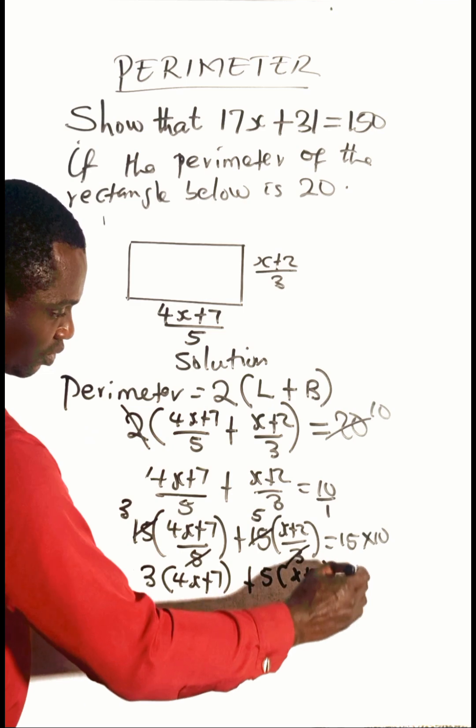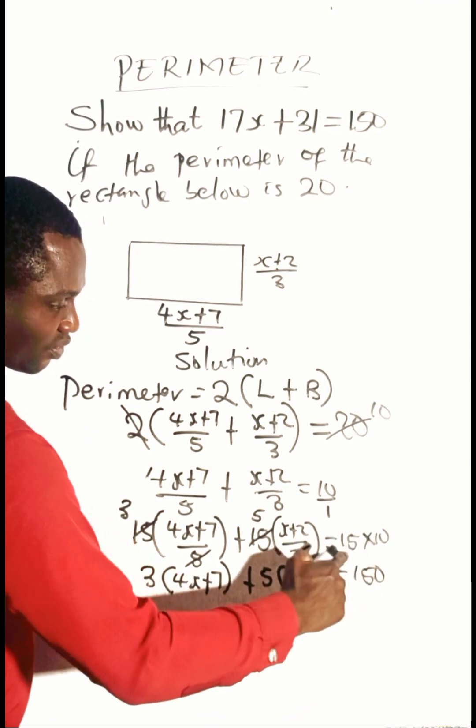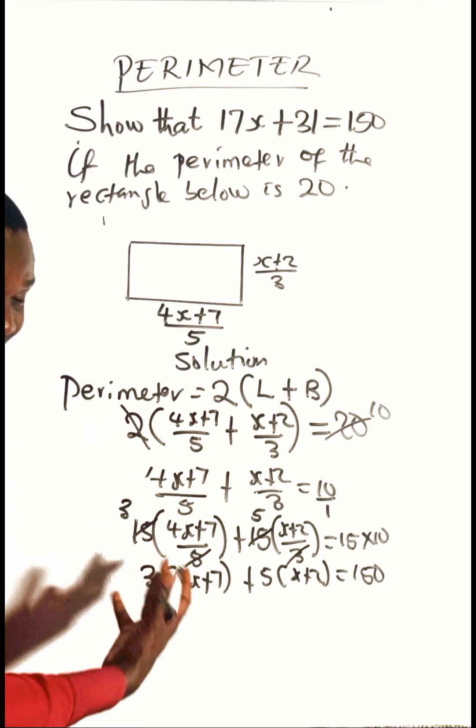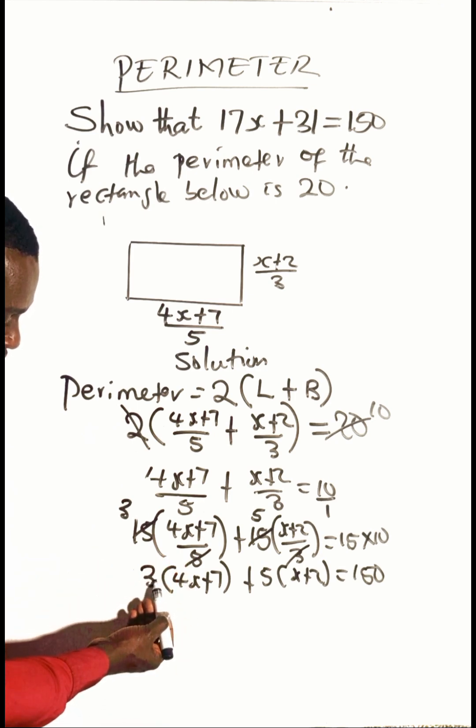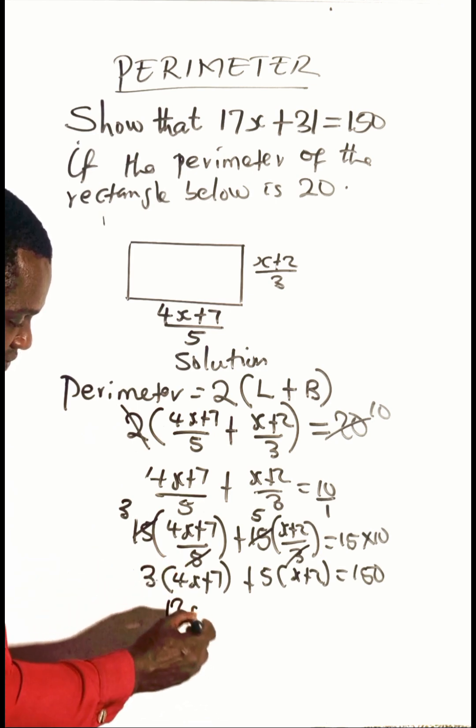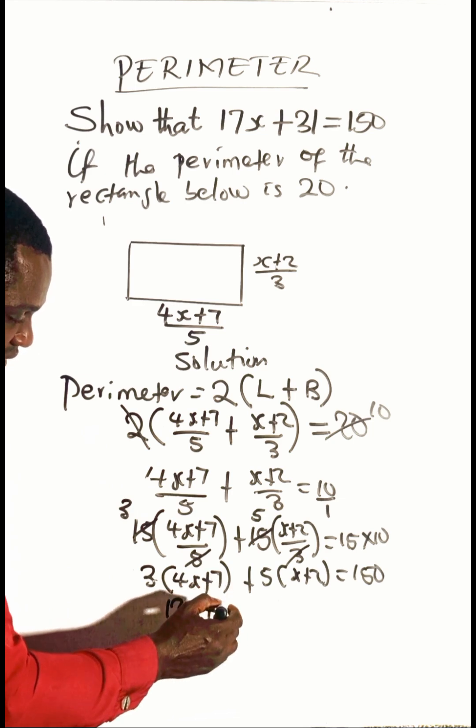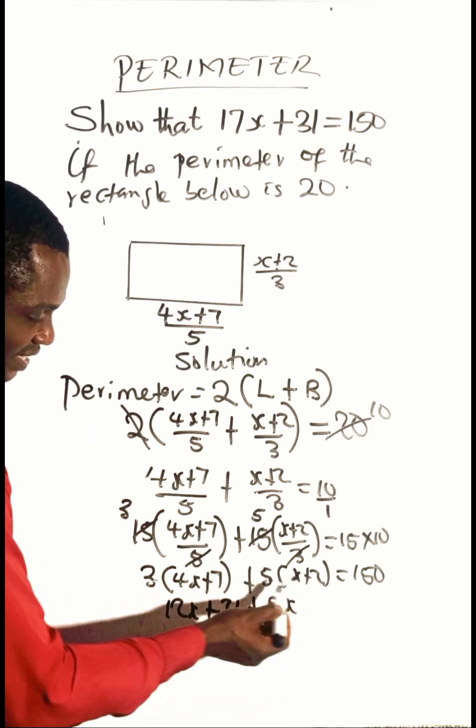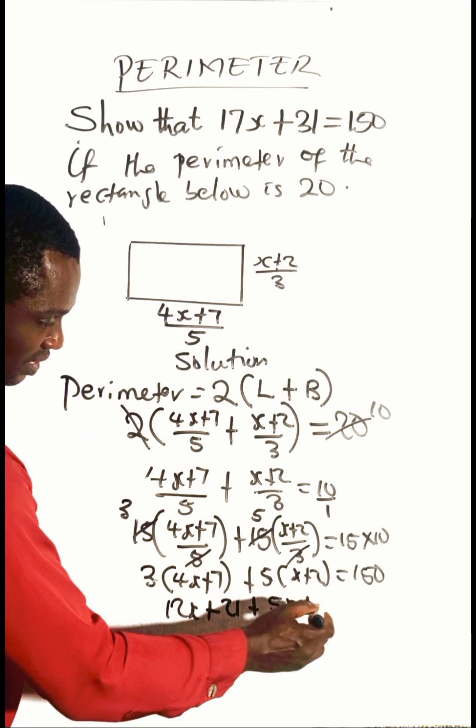Everything equals 150 because 15 times 10 is 150. Let's open the brackets. This is 3 times 4x which is 12x, plus 3 times 7 is 21, and 5 times x is 5x, 5 times 2 is 10.